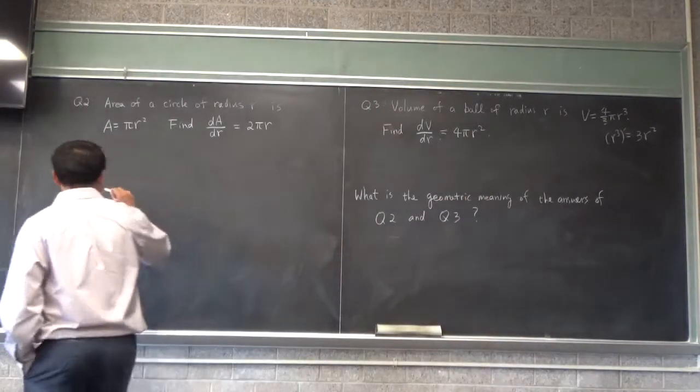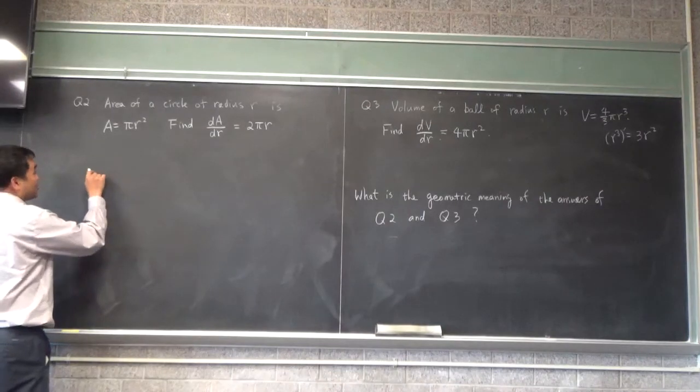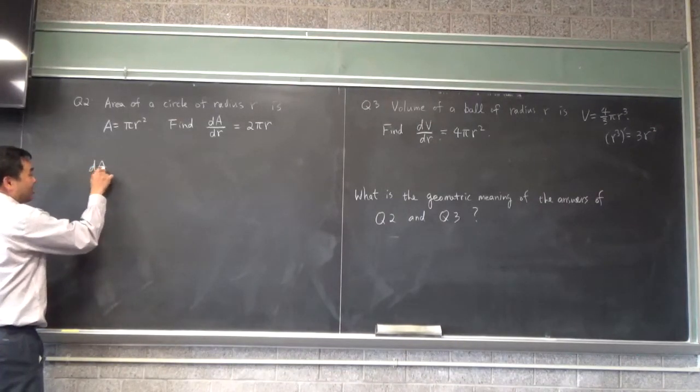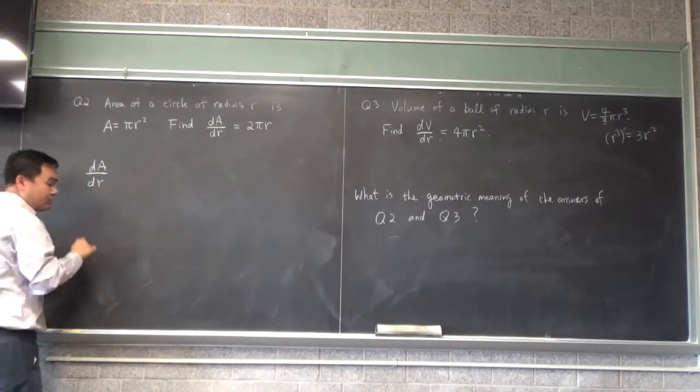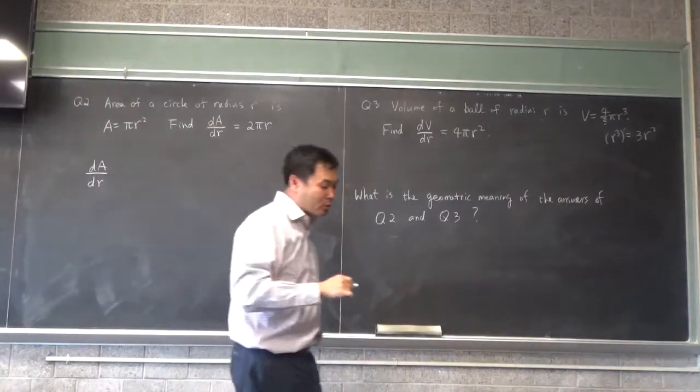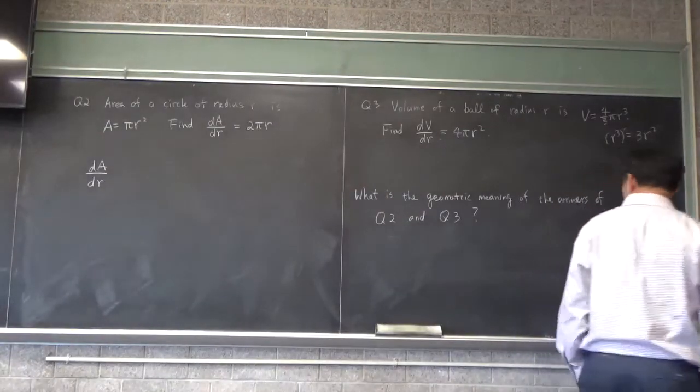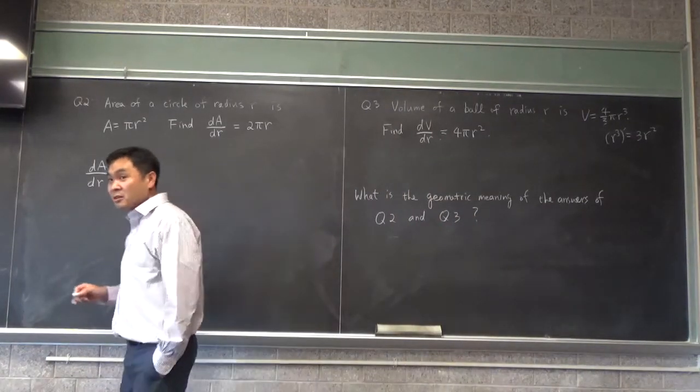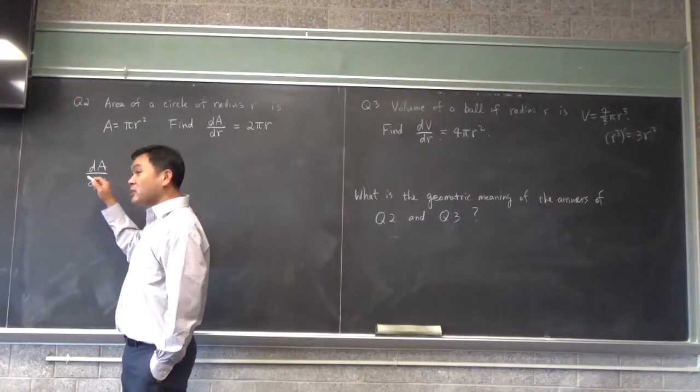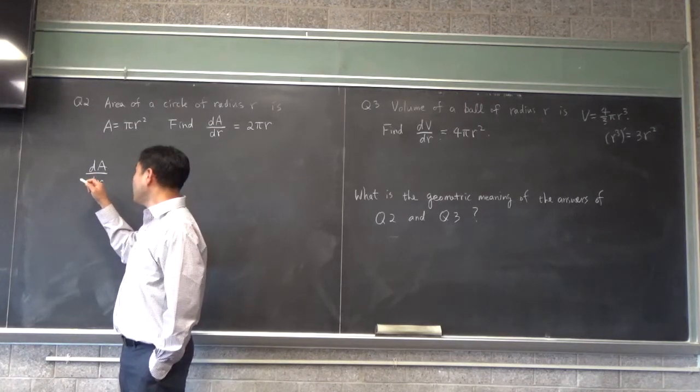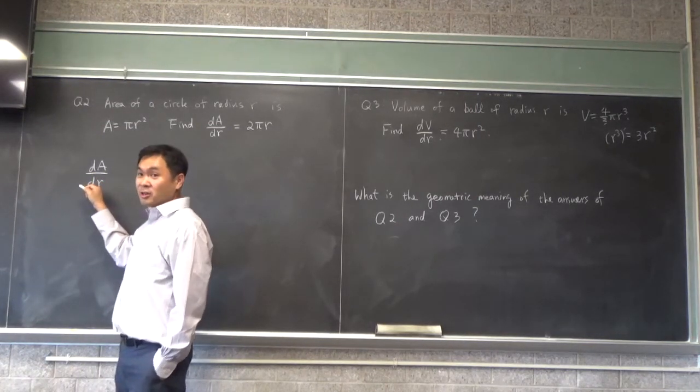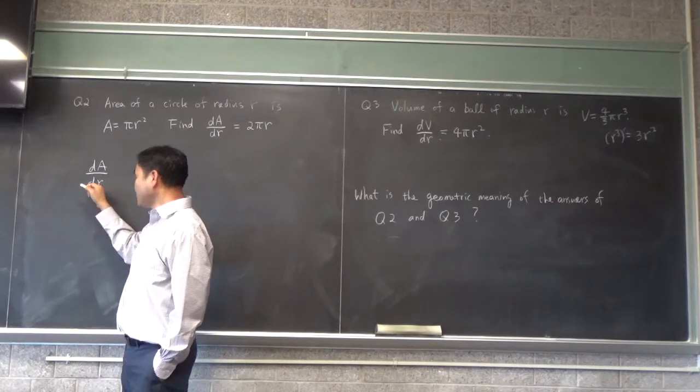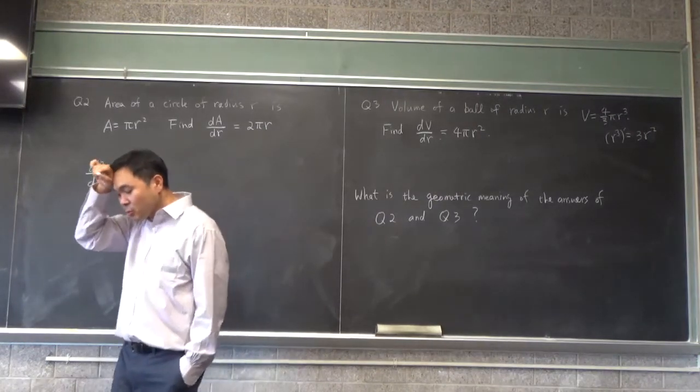But when you write dA/dR, this notation, which we call Leibniz notation, because it was the mathematician Leibniz who first invented this notation, it has a meaning closer to the instantaneous rate of change.